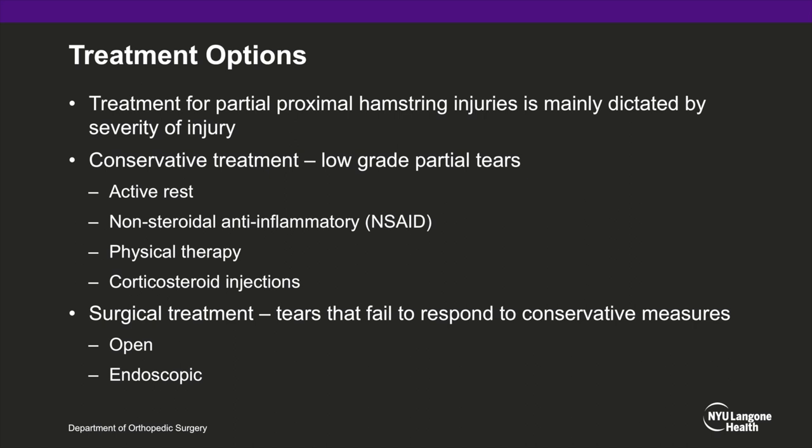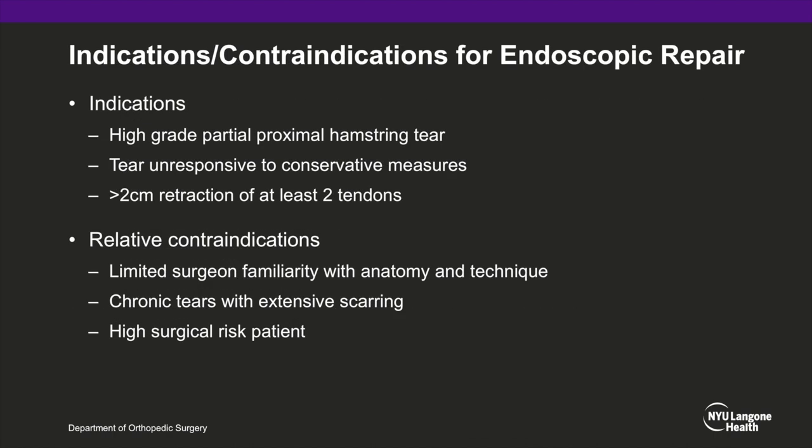For patients unresponsive to conservative measures or who have high-grade partial thickness tears, surgical treatment is typically employed. The two surgical options are open and endoscopic repair of the proximal hamstring. The main benefit of endoscopic repair is that it may reduce morbidity and complications associated with open procedures. Indications include high-grade partial proximal hamstring tear, failure of three to six months of conservative treatment, or more than two-centimeter retraction of at least two tendons.